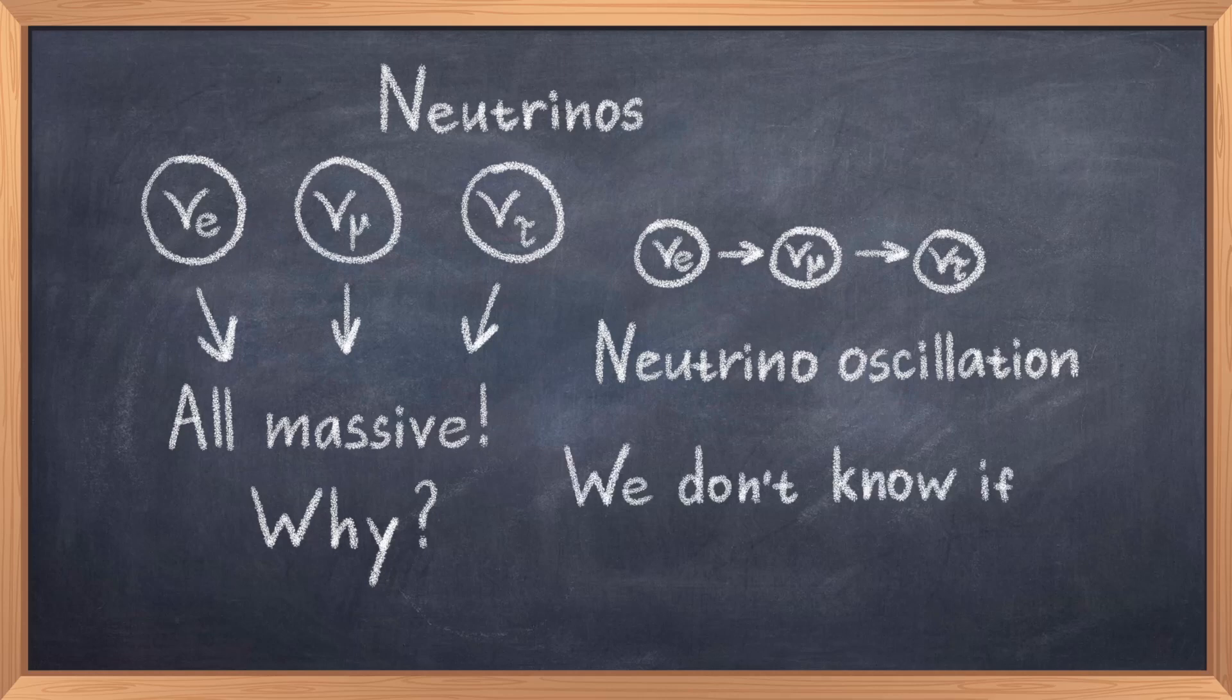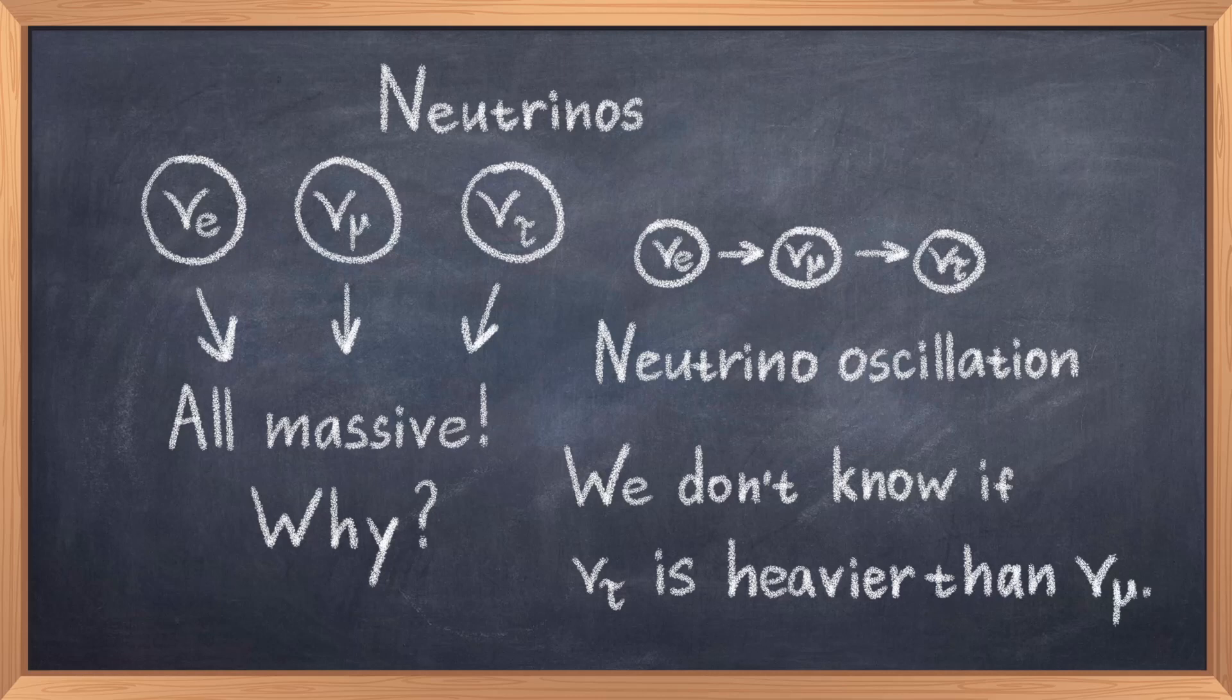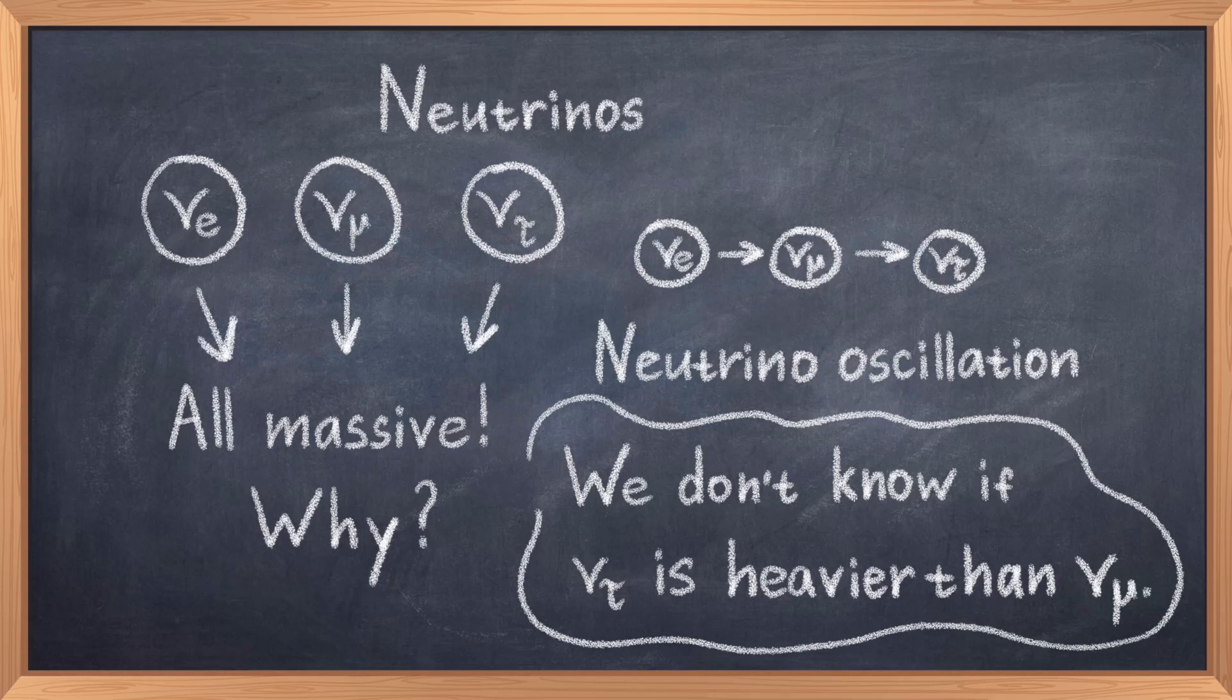About the masses, we actually don't know if the traditional mass hierarchy holds. Thus we don't know if the 3rd generation tau neutrino is heavier than the 2nd generation muon neutrino. This hierarchy holds for all other particle types. Again, the issue is that neutrinos have a small mass, and they are not easy to detect, thus it's hard to pinpoint their actual mass.